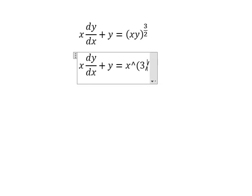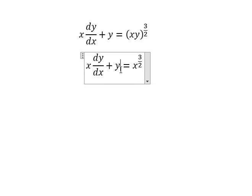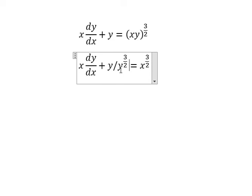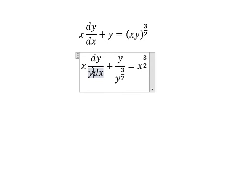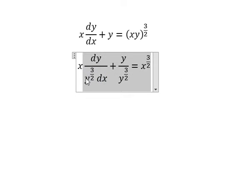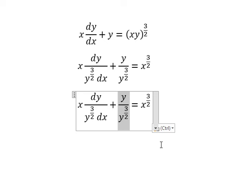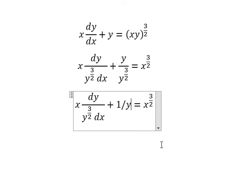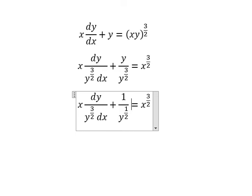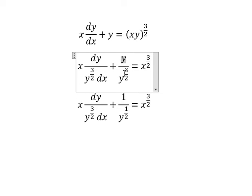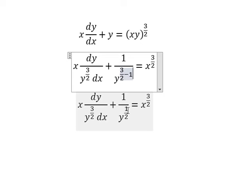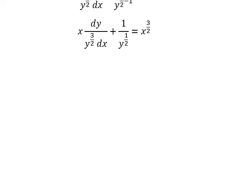We simplify and we get 1 over y to the power of 1 over 2, because y goes to the denominator, giving us y to the power of 3 over 2 minus 1, which is 1 over 2. Now we can use the Bernoulli equation.